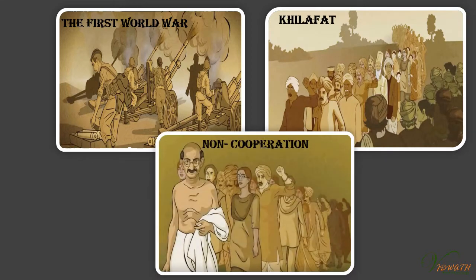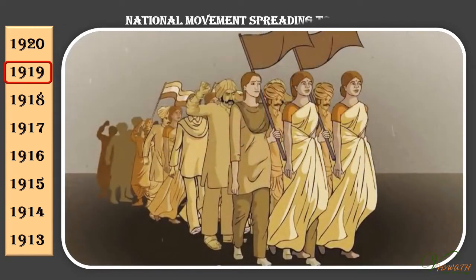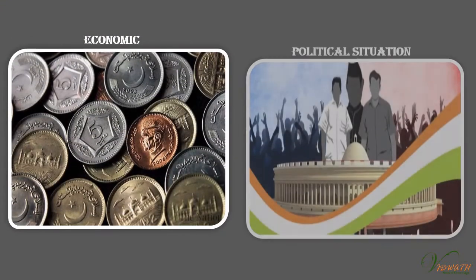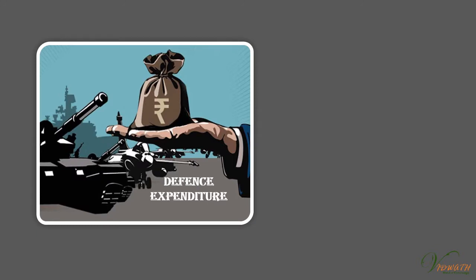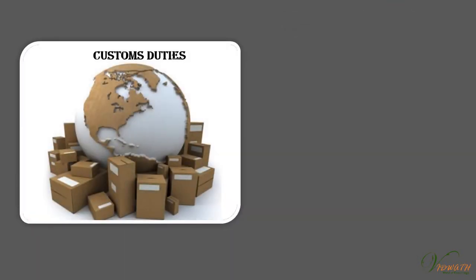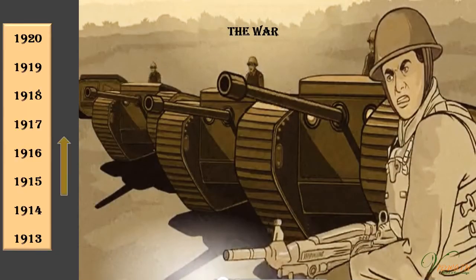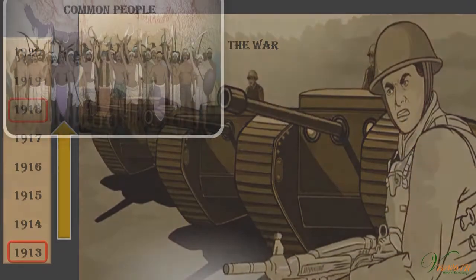In the years after 1919, we see the national movement spreading to new areas, incorporating new social groups and developing new modes of struggle. The war created a new economic and political situation. It led to a huge increase in defence expenditure, financed by war loans and increasing taxes. Custom duties were raised and income tax introduced. Prices doubled between 1913 and 1918, leading to extreme hardship for the common people.